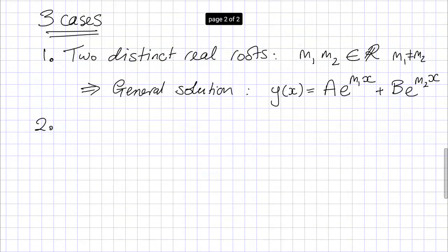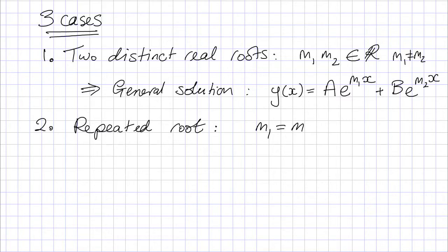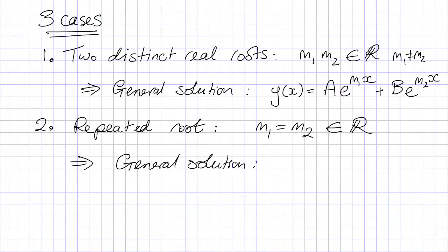The second case for the quadratic equation is that we could have a repeated root, where the two solutions are the same thing: m1 equals m2, which is a real number. In this case, the general solution reads y(x) = (A + B·x)·e^(m1·x). That's a slightly tricky one.